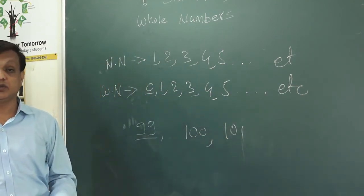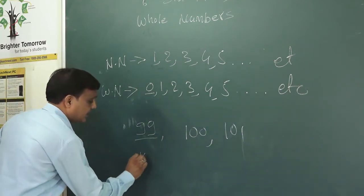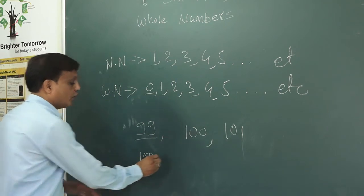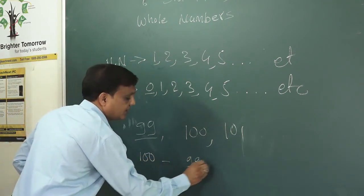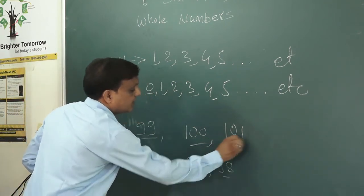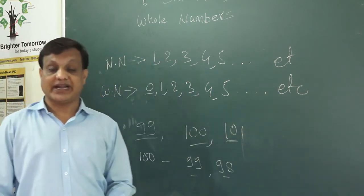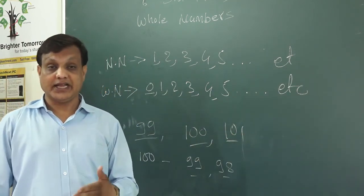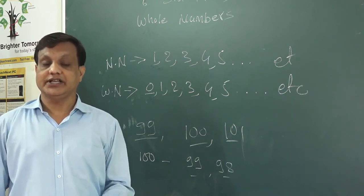And write two consecutive predecessors of a given number. For example if 100 is given, the two predecessors are 99 and 98. In this way, in the exercise there are many numbers to practice. Please practice at home. Tomorrow we will meet again and go on a new topic. Thank you.